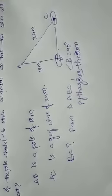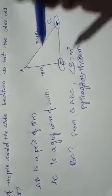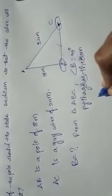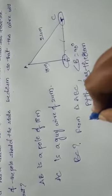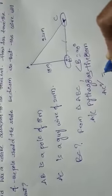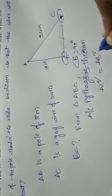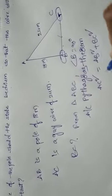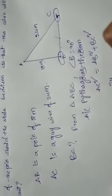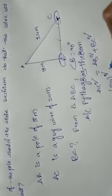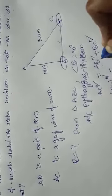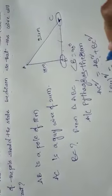According to Pythagoras theorem, hypotenuse square equal to side square plus side square. AC square equal to AB square plus BC square. AC square is 24 whole square. AB square, we know AB is 18 meters.